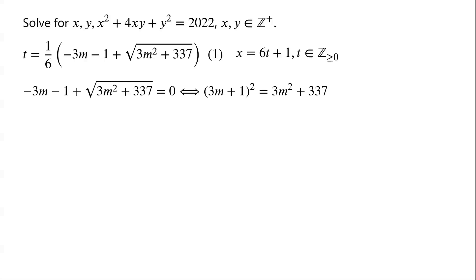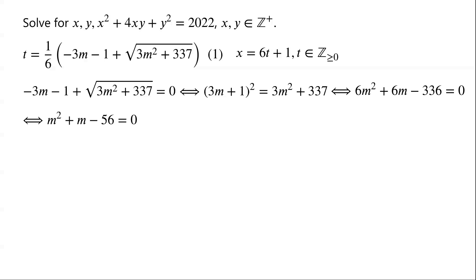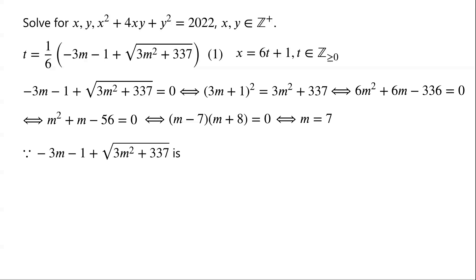This holds if and only if (3m plus 1) squared equals 3m squared plus 337, if and only if 6m squared plus 6m minus 336 equals 0, if and only if m squared plus m minus 56 equals 0, if and only if (m minus 7)(m plus 8) equals 0, if and only if m equals 7.